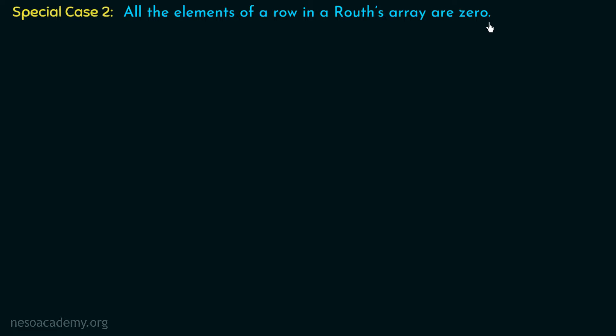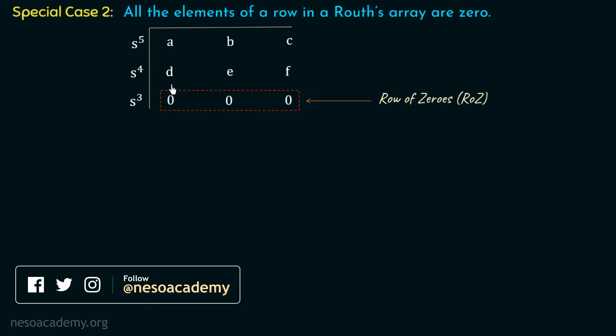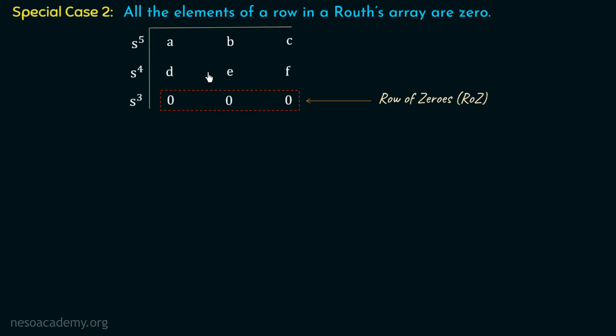Let us understand this with an example. Suppose we have a Routh array which starts from s^5, and the subsequent row is s^4. Assume the coefficients of the first row are a, b, c and the second row are d, e, f. Now during the formation of the third row, by doing the calculations on these two rows, if all the elements become 0, then this is called a row of zeros. For example, if we calculate the first coefficient, it will be (d×b − a×e)/d. After doing the calculations, we get 0. If the other two terms are also 0, then this complete row becomes a row of zeros. This is special case 2 of the Routh array.